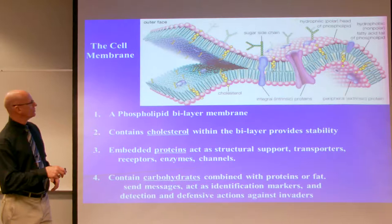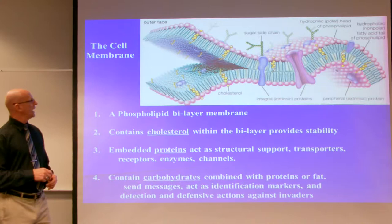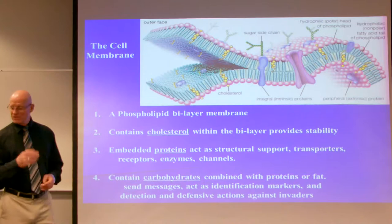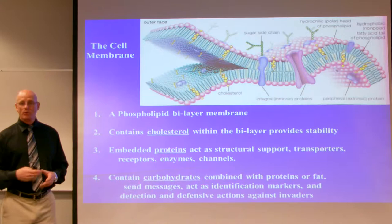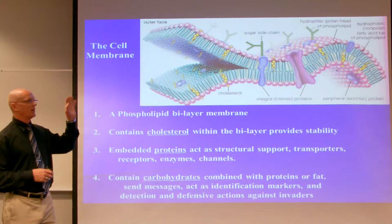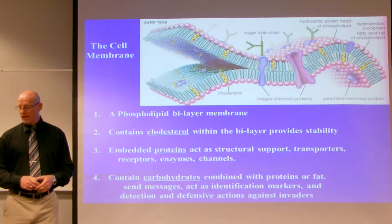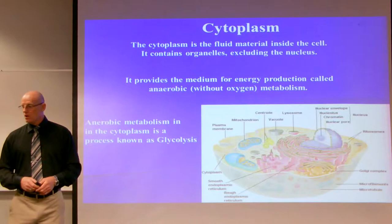The membrane also has embedded proteins that act as structural support, transporters, receptors, enzymes, and channels for nutrients. The lipid bilayer also contains carbohydrates on the exterior, either combined with proteins as glycoproteins or with fats as glycolipids. These carbohydrates send messages within the cell — for example, if there's an invader in the external environment, they act as identification markers and help detect and defend against invaders.